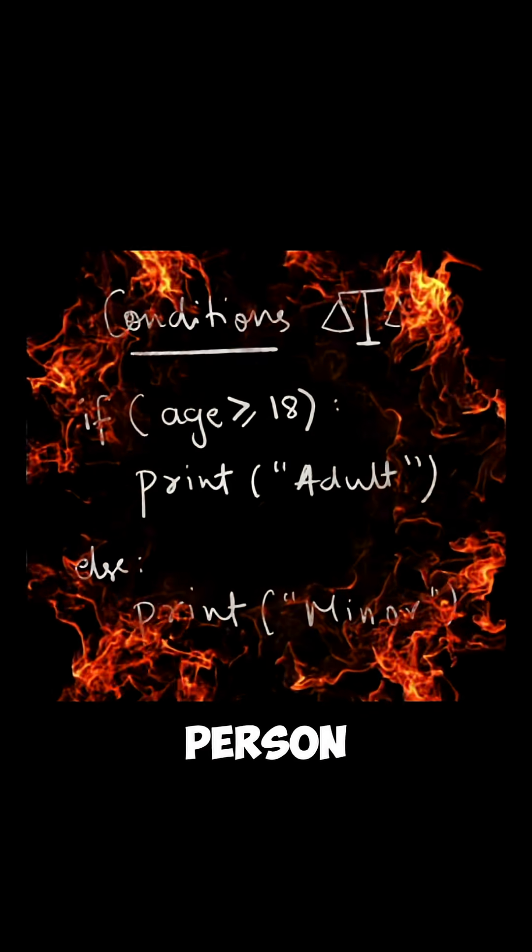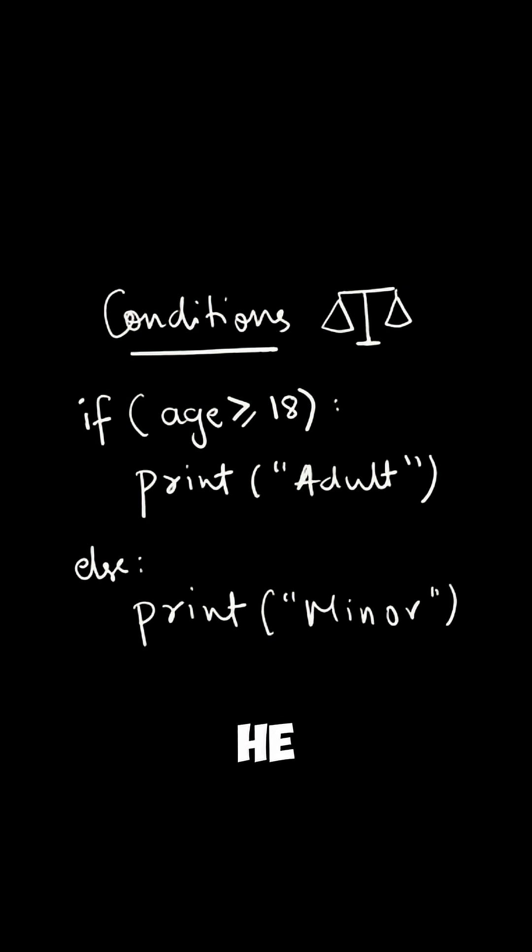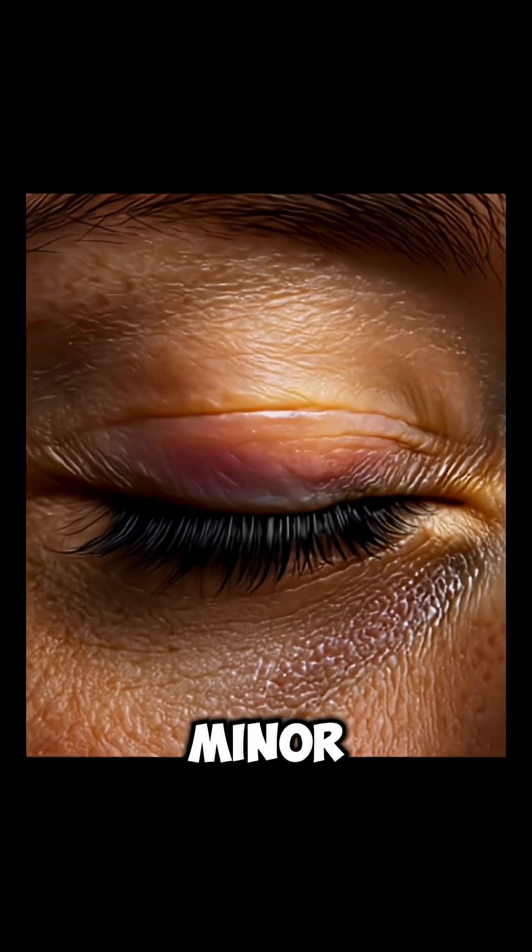Next we have conditions. Suppose person a is 20 years old. Is he adult or not? Yes, he's adult. But what if the age is stored in a variable and we cannot see? How do we check if it's greater than 18? We use if age is greater than or equal to 18, print adult, else print minor.